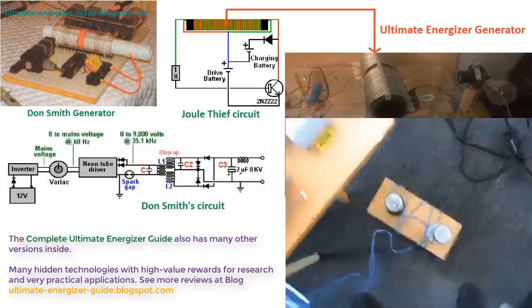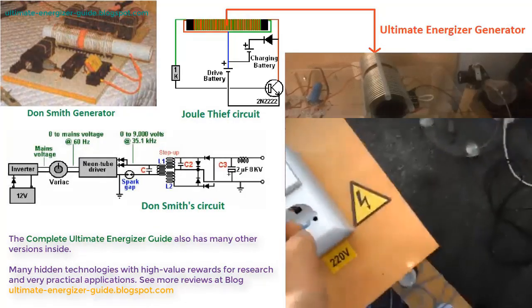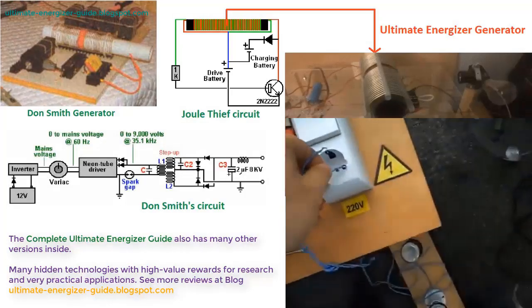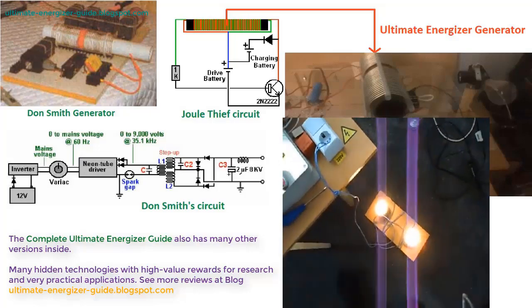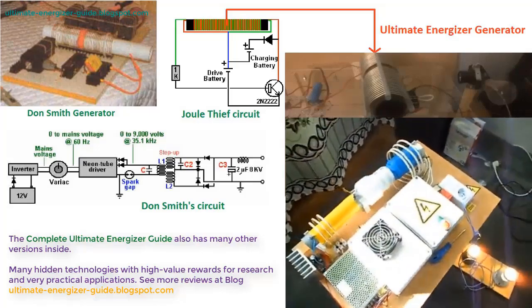The Joule thief circuit and Don Smith circuit, although capable of producing output energy greater than input energy, are primarily intended for free energy researchers. Those who demonstrate these circuits often do not share the secrets of generating electricity to power household appliances.